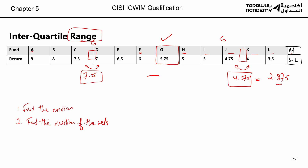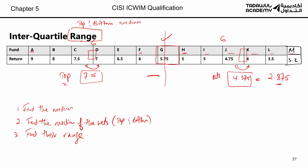Step 3: take the range of the top median and bottom median. 7.25 minus 4.375 equals 2.875. That is the interquartile range. To summarize: first split the data into two halves to find the top and bottom halves, then calculate the median for each half, then take the range — top median minus bottom median — which gives you 2.875. That is the calculation for the interquartile range.